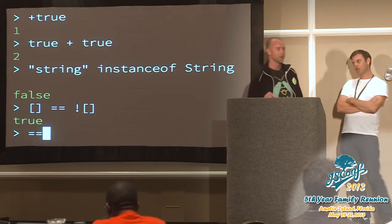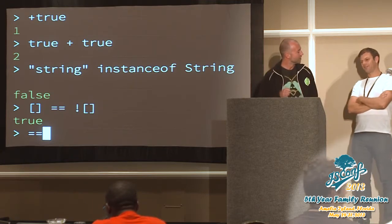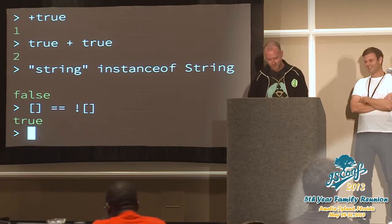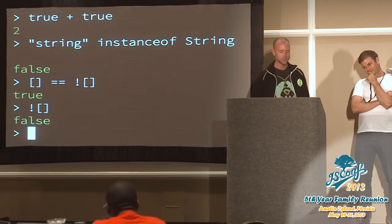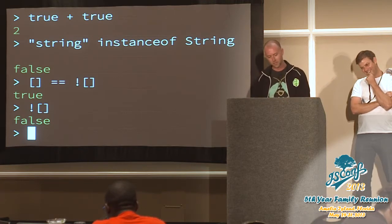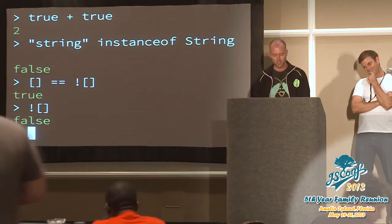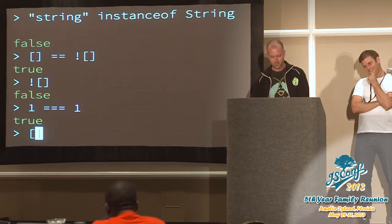In the double equals operator, sometimes called the abstract equals operator, it'll cast the thing on the right. So if I'm doing this, it's actually false. And when something's false on the right, it's going to cast it to an integer, which means it'll cast the other side to an integer — effectively like saying is one equal to one, which is why this guy is equal to this guy.